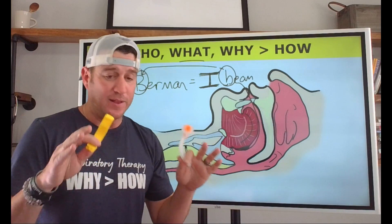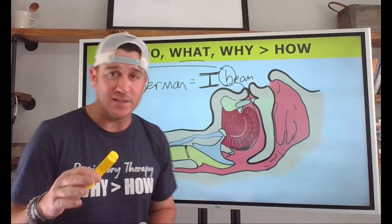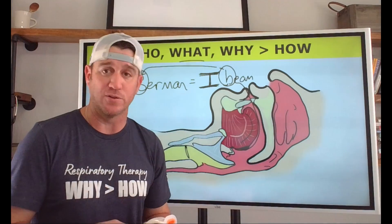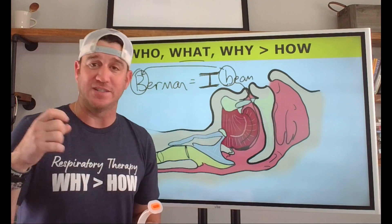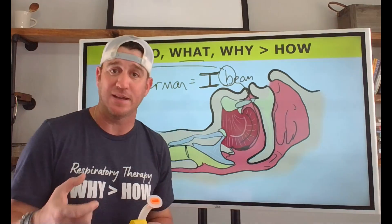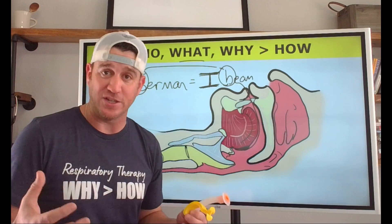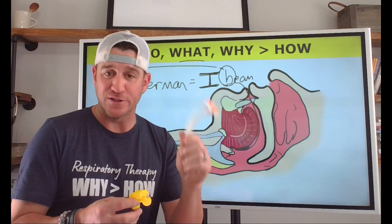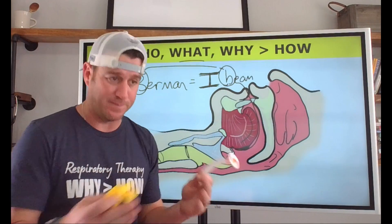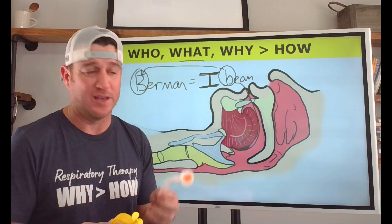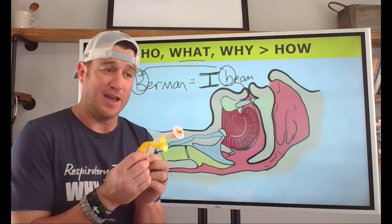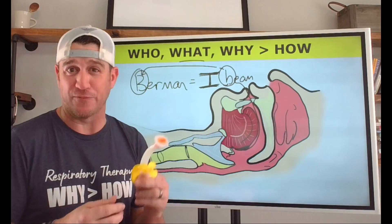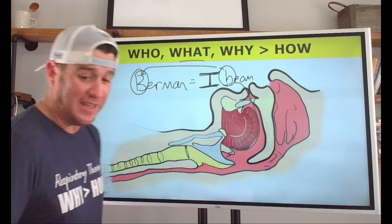Egan's does talk about OPAs being used as a bite block in the case of a patient biting on a tracheal tube. But consider this: if a patient is biting, that does not meet the definition of an unconscious patient — that patient is at least semi-conscious. There are better bite block options out there. This is extremely irritating and agitating to a conscious or semi-conscious patient given the gag reflex and having something at the back of the throat. Explore other options when you find yourself in that situation.